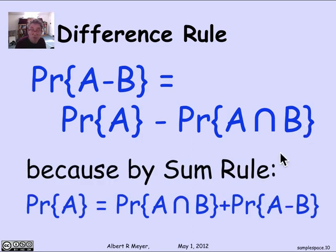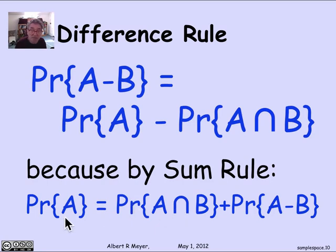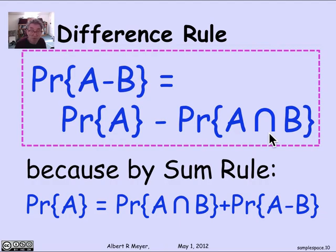By the sum rule for probabilities, A equals, set-theoretically, A intersection B union A minus B — that is, A breaks up into the points it has in common with B and the points it doesn't have in common with B. Since those are disjoint, you can add them: the probability of A equals the probability of A intersection B plus the probability of A minus B. Transposing A minus B to the left-hand side gives the difference rule, which is a rule worth remembering.